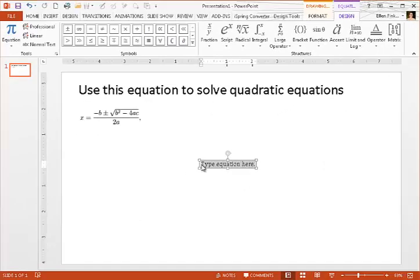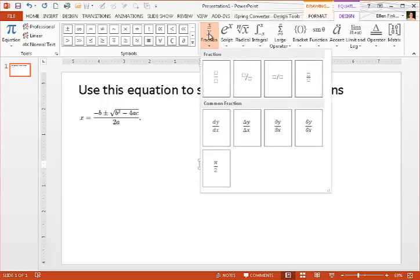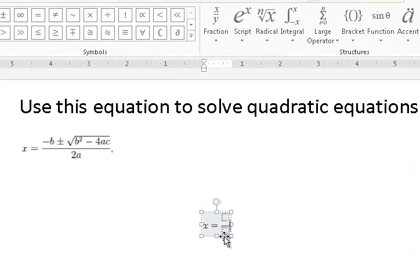So I'm going to start by typing x. And there is an equal sign here that I could use, although I could probably type it. And the next thing I need is a division sign, this long horizontal line going across the whole thing. And so here I have a fraction option, and you can see I can do different types of fractions. So I'm going to choose this one here. And then I have two boxes that I can use to type in.